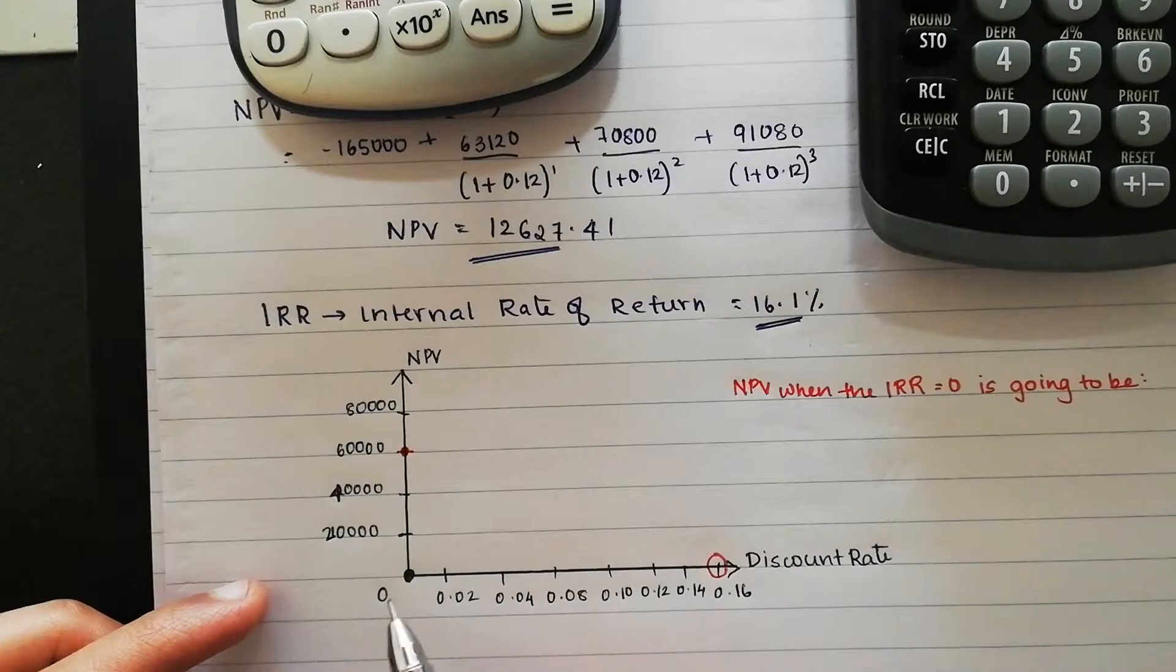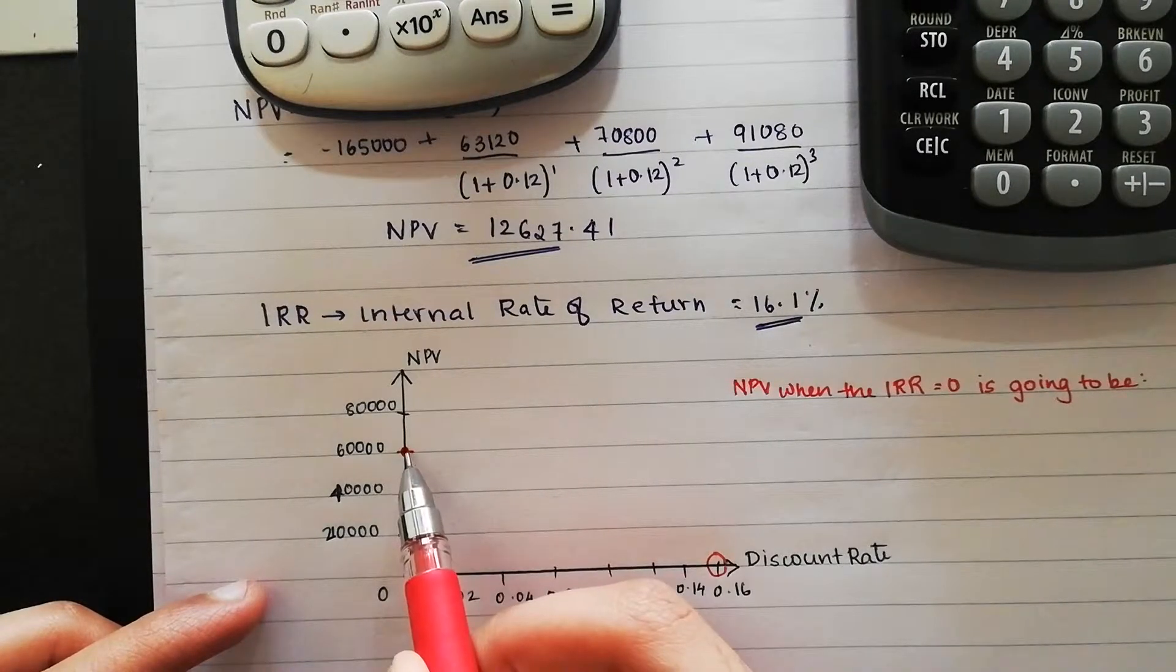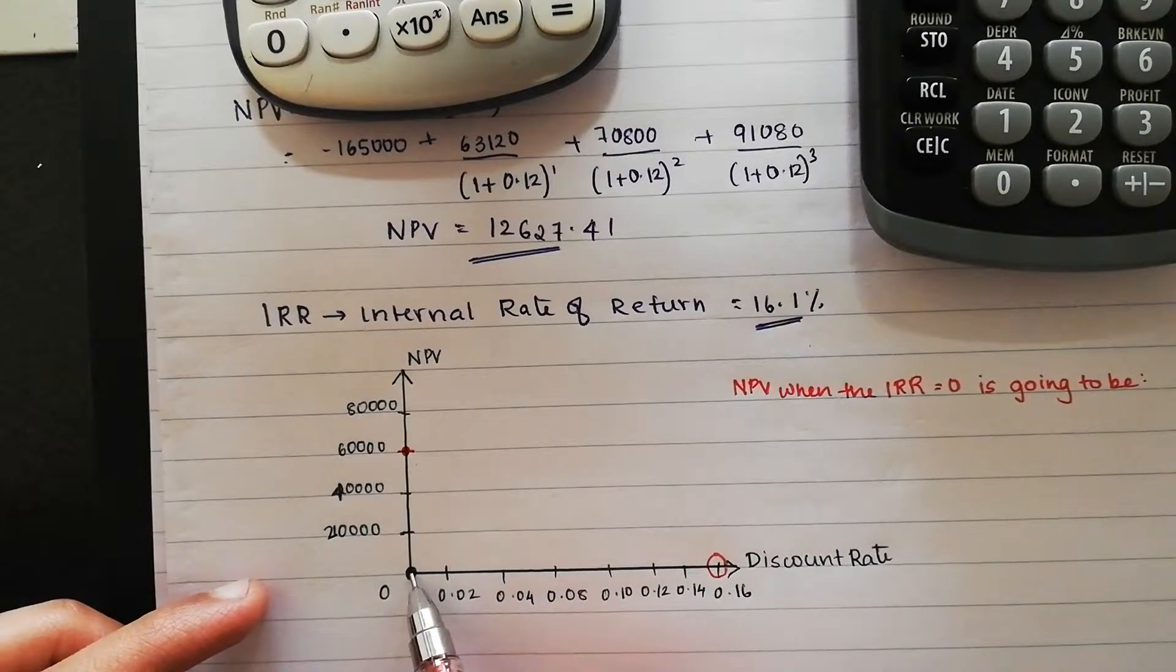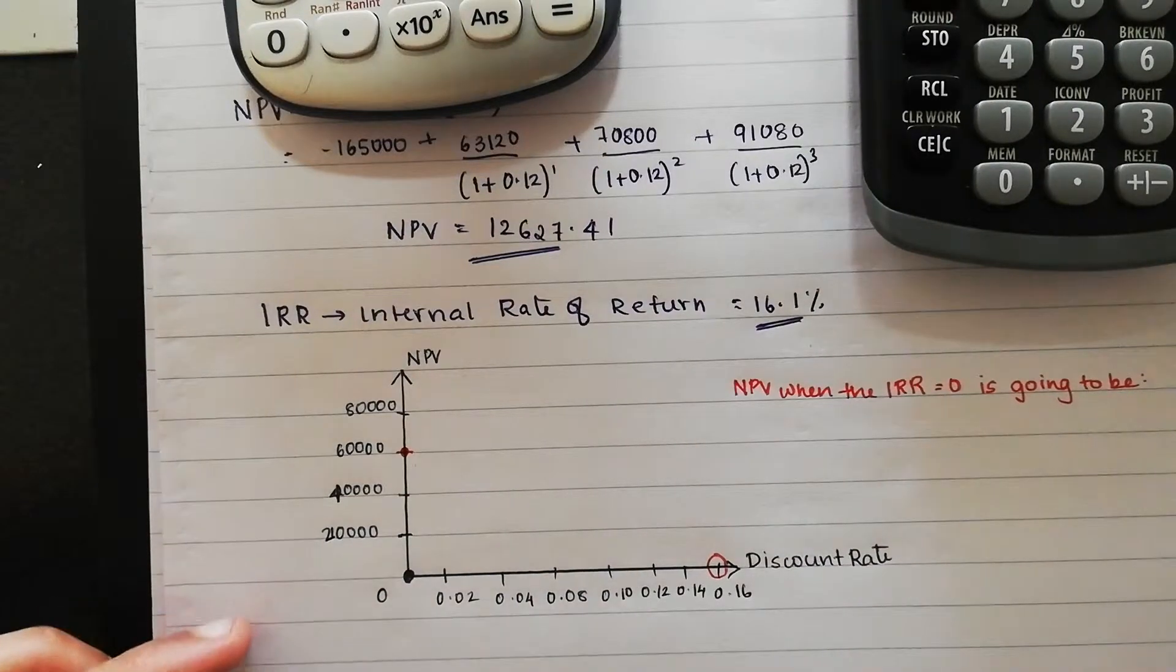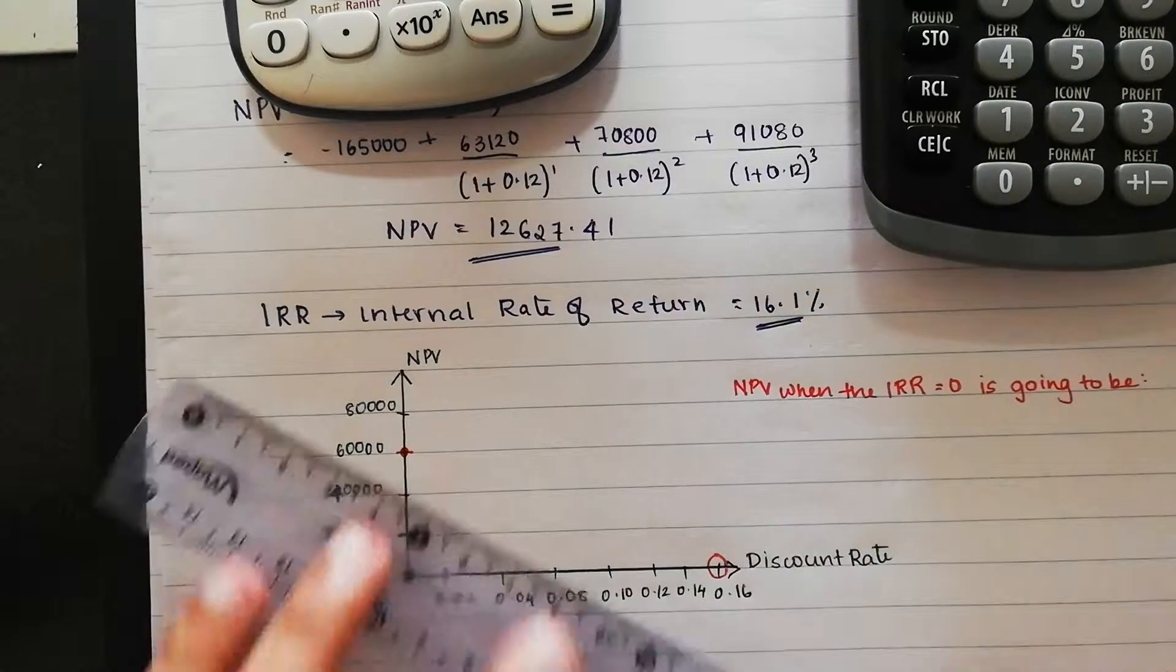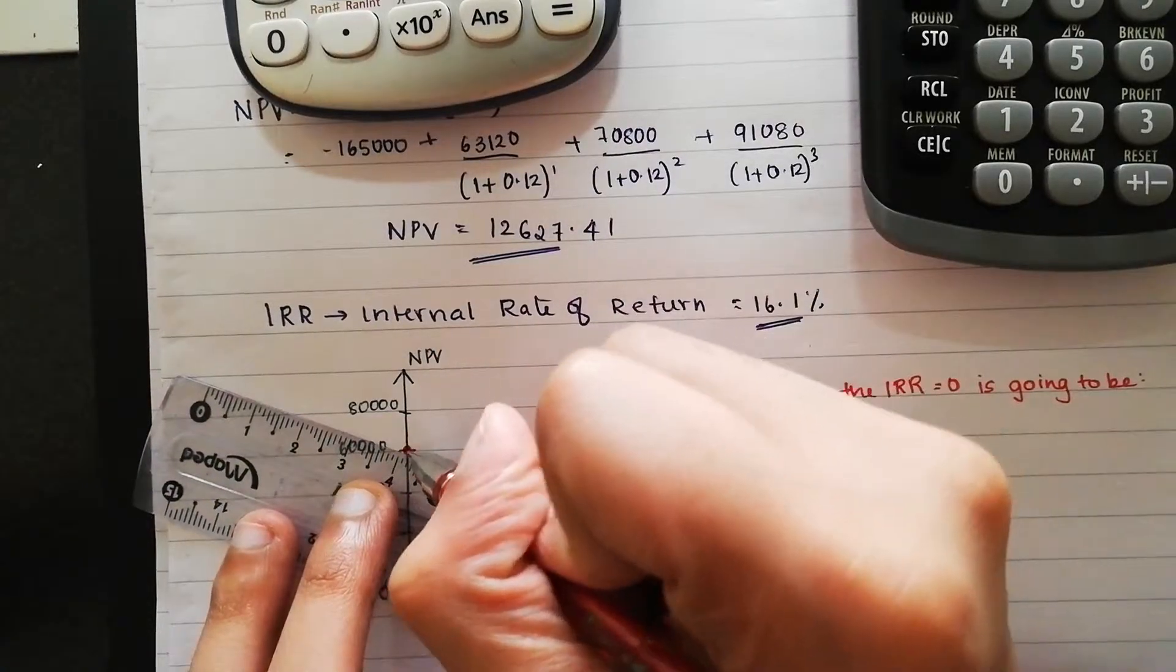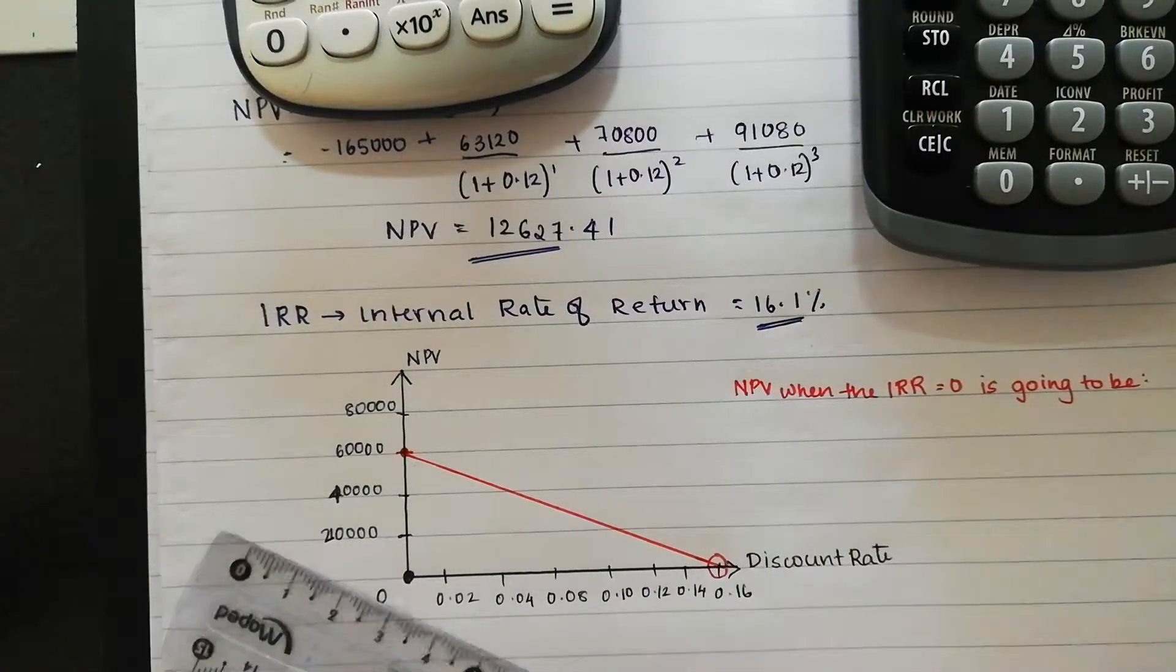So when your discount rate is 0, your NPV is going to be 60,000. When your NPV is 0, your IRR is going to be 16.1%. So we have just calculated our NPV profile.